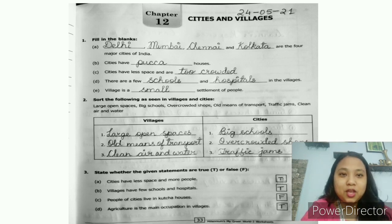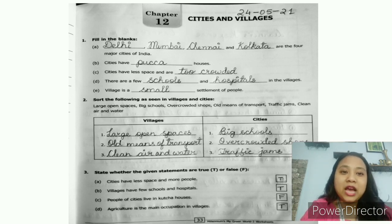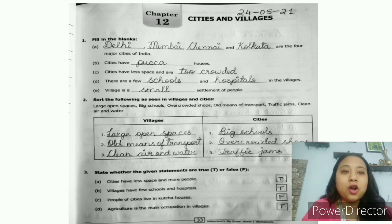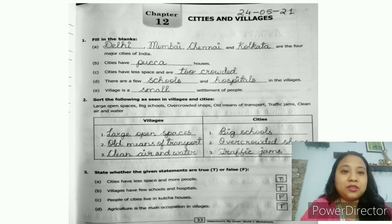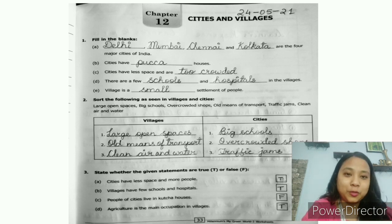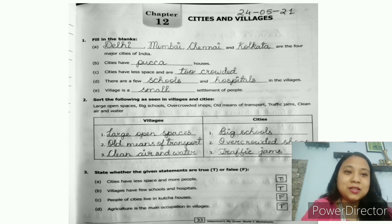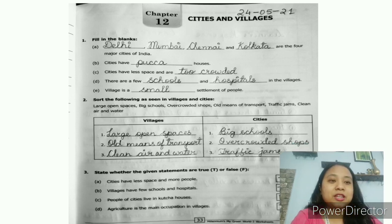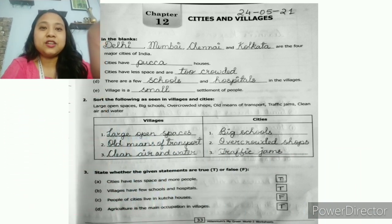Moving on to question number two: sort the following as seen in the cities and the villages. We have two columns — one for villages and one for cities. In the village column we write: number one, large open spaces; number two, old means of transport; number three, clean air and water. In the city column we write: number one, big schools; number two, overcrowded shops; number three, traffic jams.